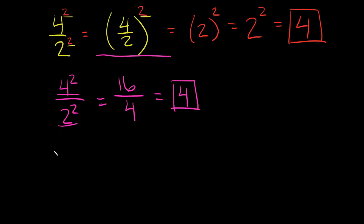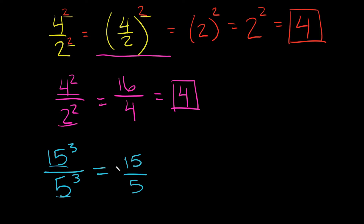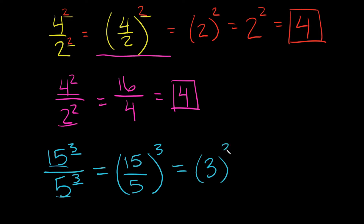For example, if we had 15 cubed over 5 cubed — our bases are 15 and 5, so we write 15 over 5 and keep the exponent of 3. What's 15 divided by 5? That's simply equal to 3, and we still have our exponent of 3. So this reduces down to 3 cubed, which is 3 times 3 times 3, equal to 27.